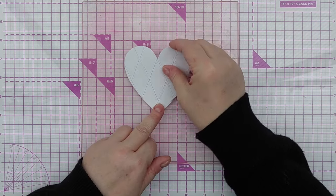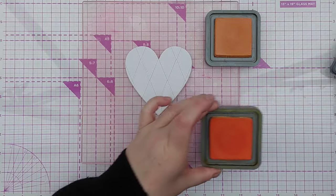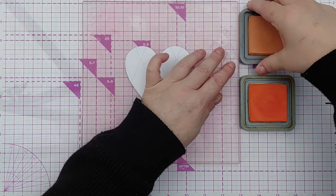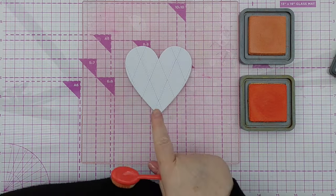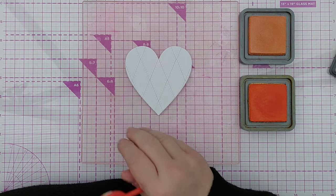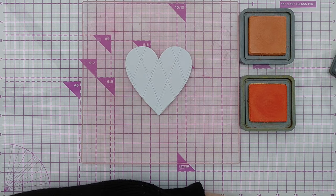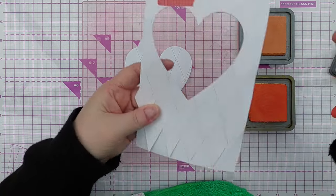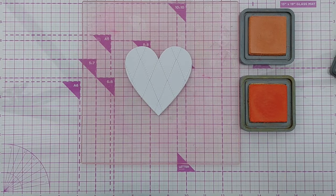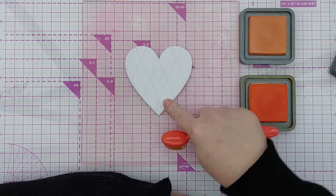And ink it up with some distress oxides. I've got spiced marmalade, which I think of as a bright, and dried marigold, which I think of as a pastel. Now you could do your coloring before you cut your diamonds, or you could do your coloring before you cut your heart, but I'm doing it after I've cut everything I want. Because I've now got this leftover which I can use if I want to and color it however I want.